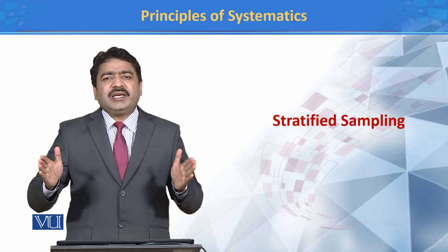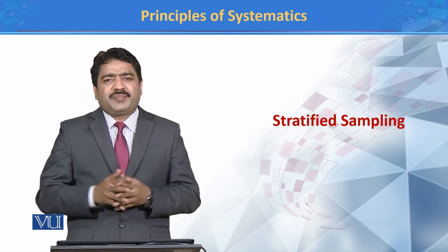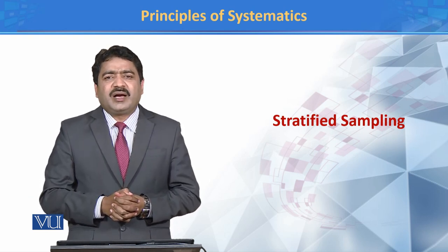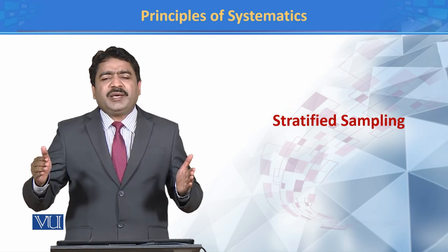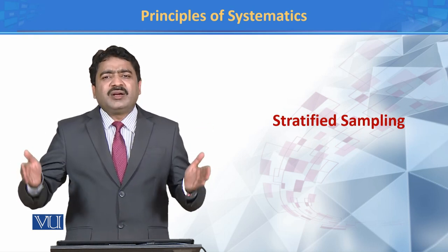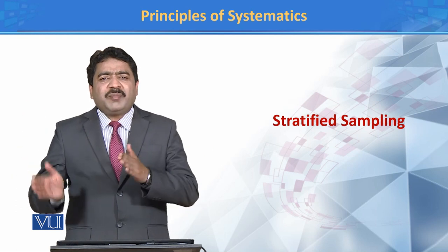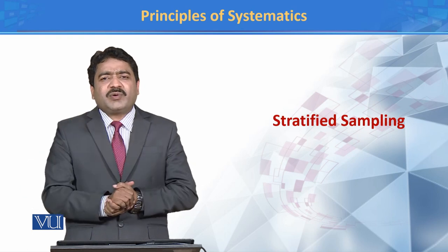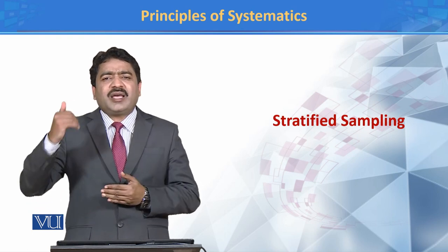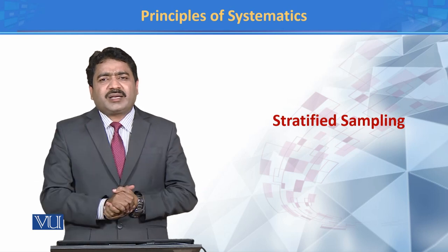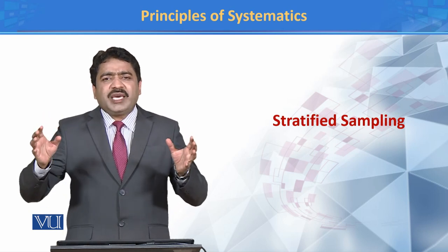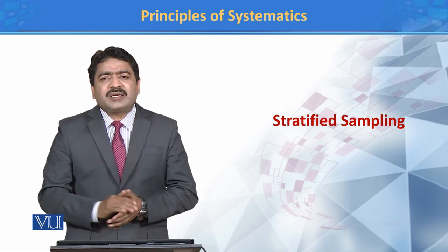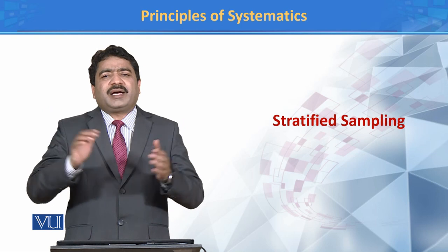अब एक field के अंदर जितने भी plants हैं, उन तमाम का data हम record नहीं कर सकते. हम क्या करते हैं? Randomly हम कोई से 100 plants select करते हैं, और उन 100 plants سے 1 سے 5 cm کا بھی data collect करते हैं, 6 سے 10 cm کا بھی, اور 11 سے above کا بھی data record करते हैं. और हम ये पता चलाते हैं कि مختلف heights پر کس کسم کے insects پاए जाते हैं.